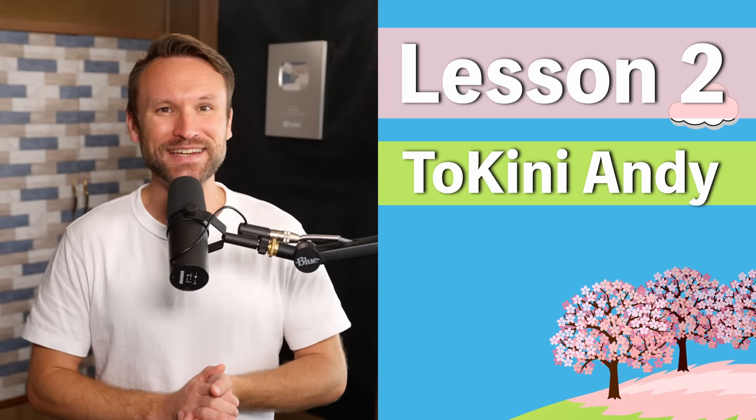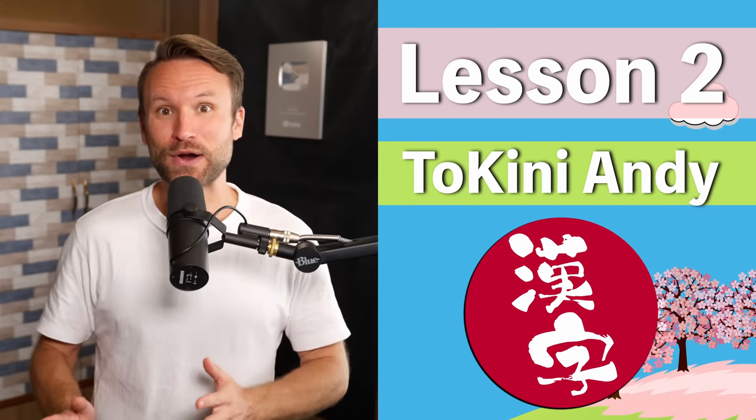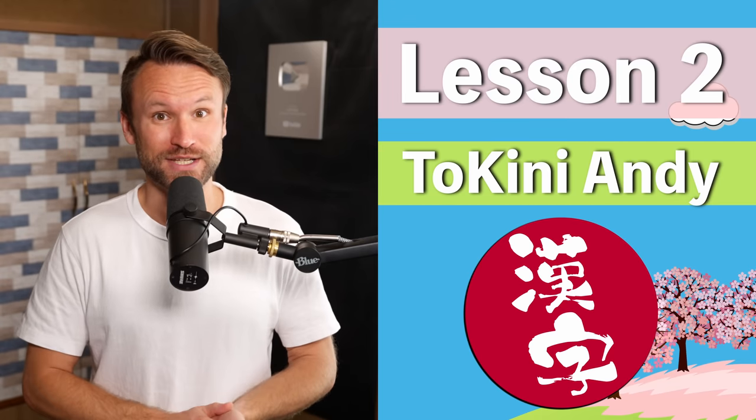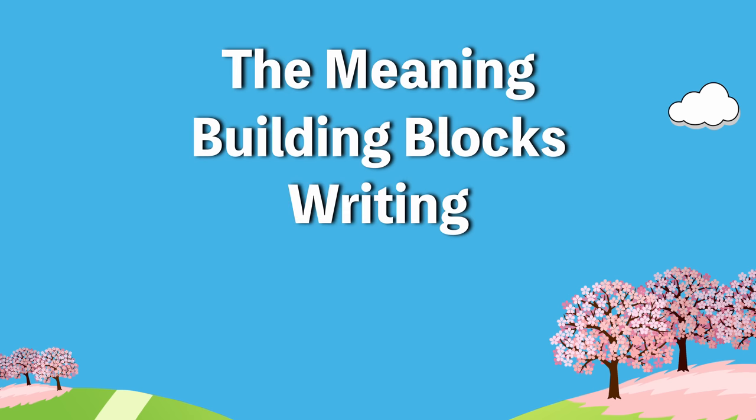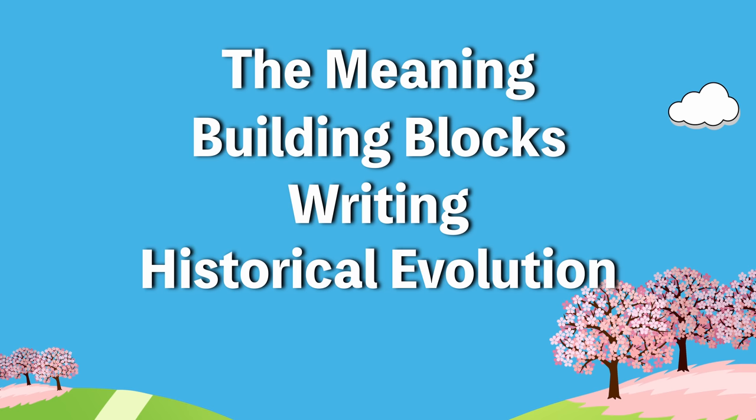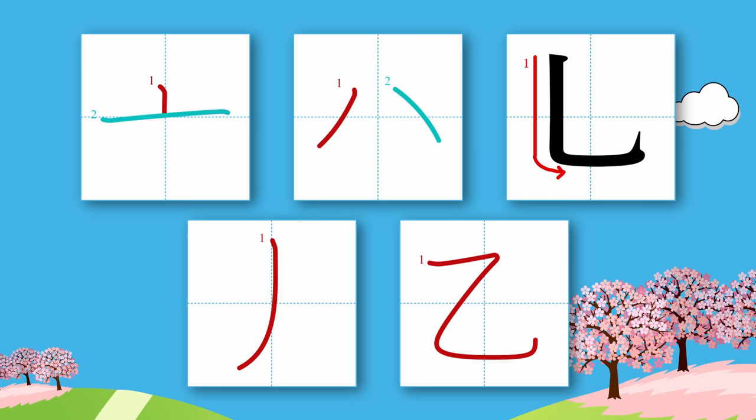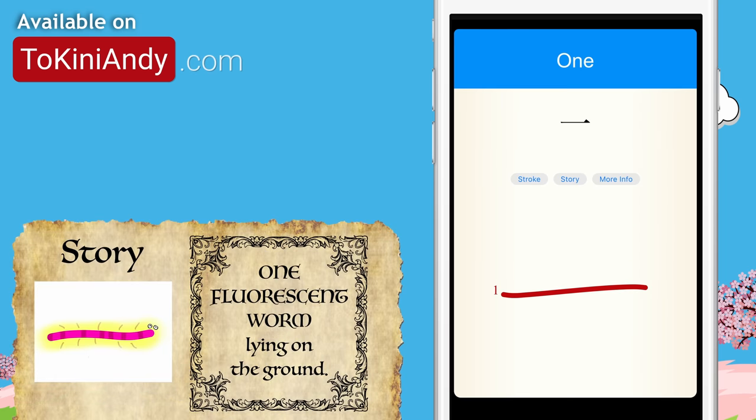Welcome to the second Token Yandy Kanji Lesson. Today, we have lots of parts and radicals to learn along with our five kanji, so we're jumping right in. We're going to be covering the meaning, building blocks, writing, historical evolution where applicable, and a story to memorize each of the following kanji. We'll also learn the parts and radicals needed for those kanji, and stick around to the end of the lesson where we'll be doing a quick quiz to help everything stick.